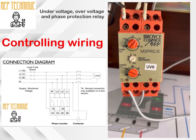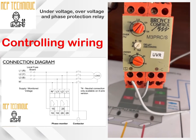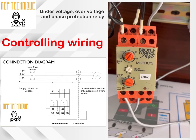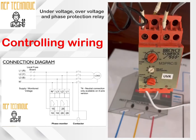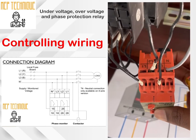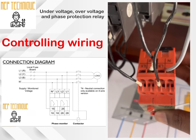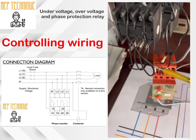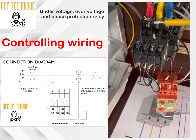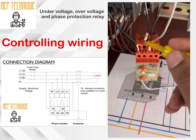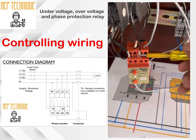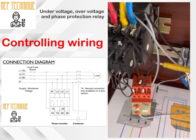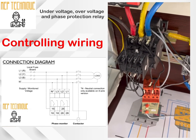Now let's discuss the electrical controlling wiring and how we connect the cable to the main power supply. You can see here there are four terminals: Line 1, Line 2, Line 3, and Neutral. Line 1 is connected with R phase, Line 2 connected with Y phase, Line 3 connected with B phase, and Neutral is connected with neutral. This is the auxiliary supply of the relay.